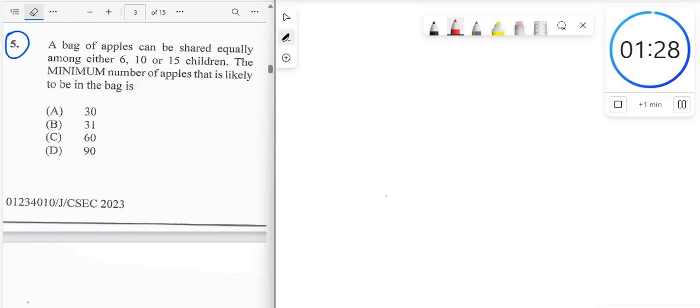All right, so for question 5, we're told that a bag of apples can be shared equally among either 6 children, or 10 children, or 15 children. The minimum, smallest number of apples that is likely to be in the bag is which of these numbers? Well, let's start with the smallest number we're seeing there, which is 30. All right? If we have 6 children, can a bag of 30 apples share it equally among them? Let's see.